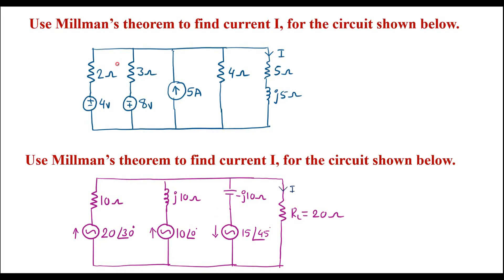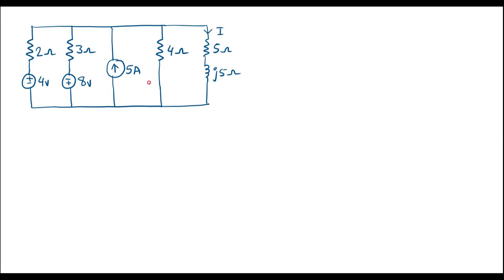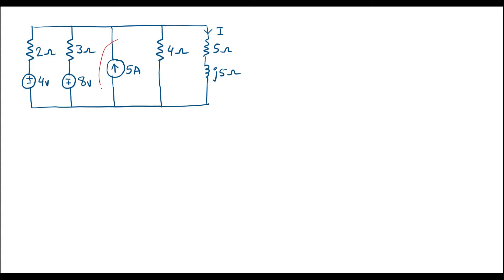Let me consider the first numerical. In Millman's theorem, the theorem can be applied only if a voltage source is in series with a resistor. Here we can see that the 4 volt source is in series with 2 ohm, and the 8 volt source is in series with 3 ohm. However, we also have a current source in parallel with a 4 ohm resistor, so I will first convert this current source into a voltage source using source transformation.